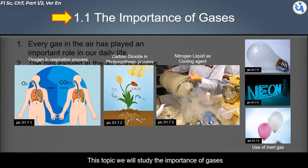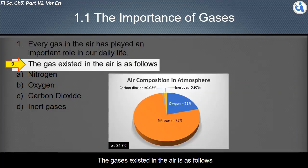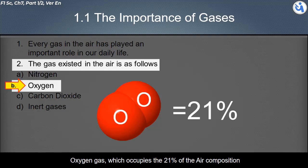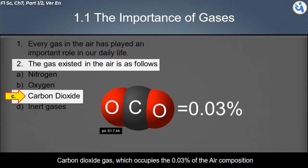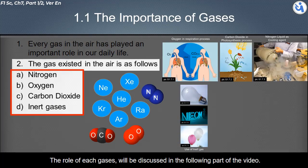In this topic, we will study the importance of gases. Every gas in the air plays an important role in our daily life. The gases in the air are: nitrogen gas at 78%, oxygen gas at 21%, carbon dioxide at 0.03%, and inert gases at 0.97% of the air composition. The role of each gas will be discussed in the following part.